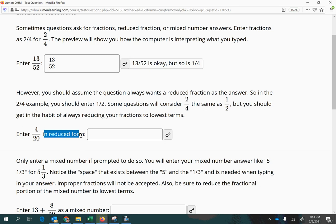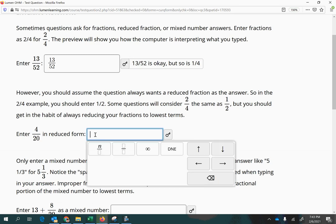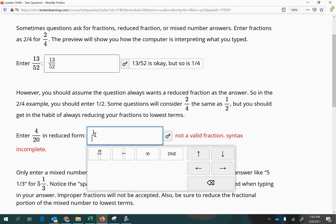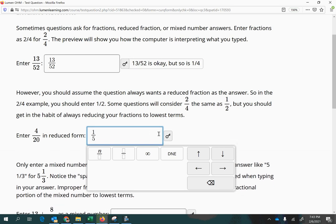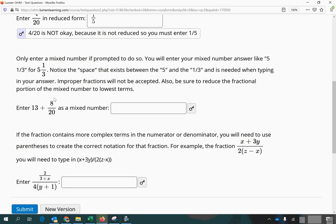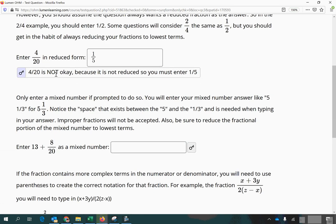The next one actually says in reduced form, so 4 over 20. Look for the largest thing that goes into both the numerator and the denominator evenly. So 4 will divide into both of those evenly, so I'm going to do 4 divided by 4 is 1, and 20 divided by 4 is 5. Notice it will tell you that 4 over 20 is not okay here because it's not reduced.